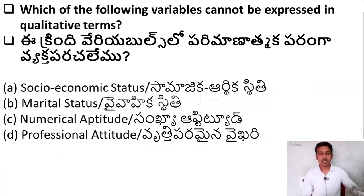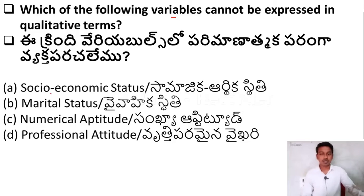The question is: which of the following variables cannot be expressed in qualitative terms? Option A: socio-economic status. Option B: marital status. Option C: numerical attitude. Option D: professional attitude.